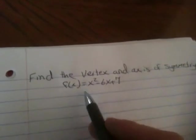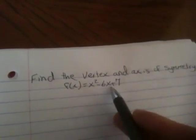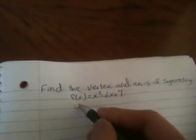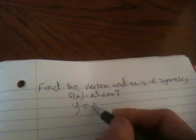Hi everyone, today we'll find the vertex and axis of symmetry of f(x) = x² - 6x + 7. We know that f(x) equals y, so y = x² - 6x + 7.